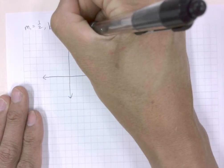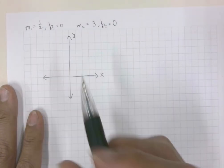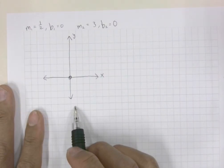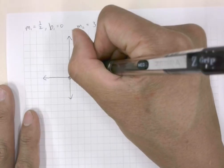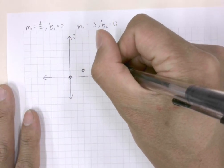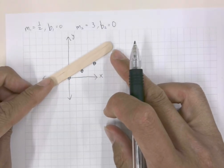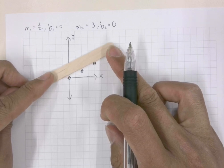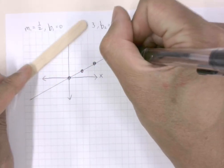Here's our x-axis and y-axis. We start with our b, which is 0 — that's our first point at the origin. Our slope is 1 over 2, rise over run, so we rise 1 and run 2 to get our second point. We rise 1 and run 2 again for our third point. Then we get a straight edge and draw our line.